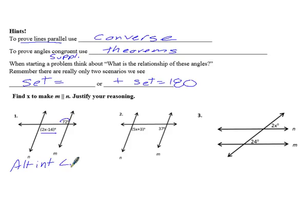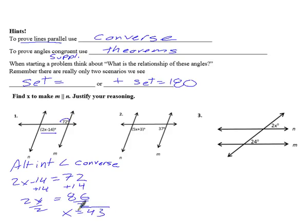Now since I'm proving lines parallel, I'm going to call this the alternate interior angle converse. And then the relationship with alternate interior angles was that I set those equal to each other. And so now we just solve for x. Then we get 2x equals 66, divide by 2, and we get x is 33.